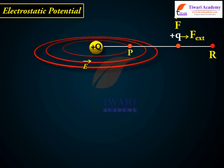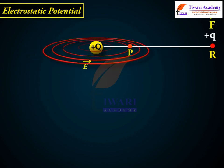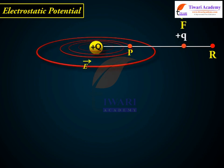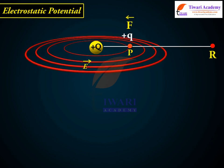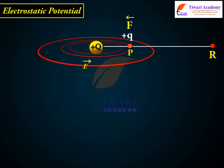If the external force is removed on reaching P, then electrostatic force will take the charge away from Q. The stored potential energy at P is used to provide kinetic energy to the charge q in such a way that the sum of the kinetic and potential energies is conserved.